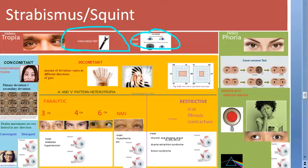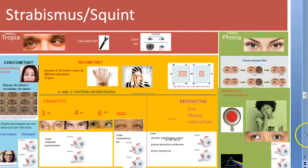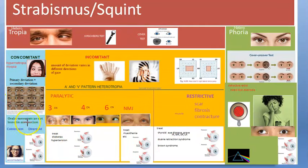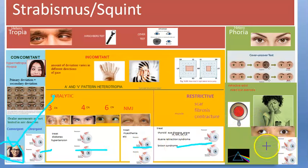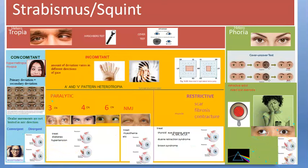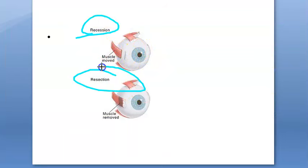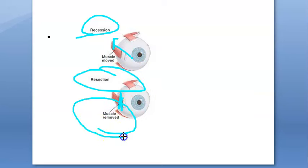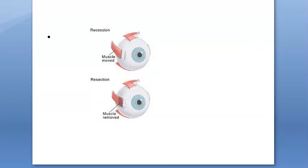To detect heterotropia, the Hirschberg test and cover test are used. To detect heterophoria, the cover-uncover test, Maddox rod, and Maddox wing are used. Treatment mainly involves fixing the underlying cause. For convergent accommodative squint, spectacles may be prescribed. Otherwise, surgical options include prisms to control diplopia and surgery on the extraocular muscles - recession, where the muscle is moved backward, or resection, where part of the muscle is removed.